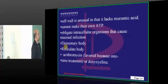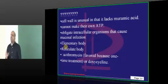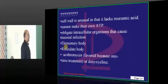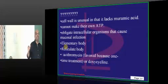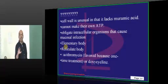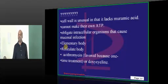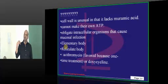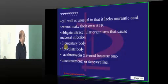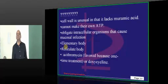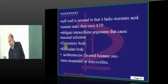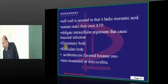Give me an answer doctor. What is this organism? The cell wall is unusual — it lacks muramic acid. It cannot make its own ATP. It is an obligate intracellular organism that goes to the next-door roommate and eats his food. It has an elementary body, reticulate body, and we use azithromycin. Chlamydia — everybody shouting out the answer.